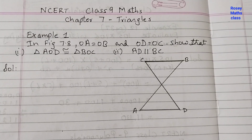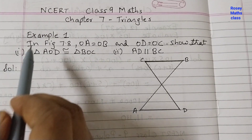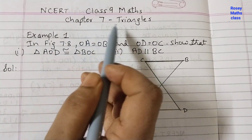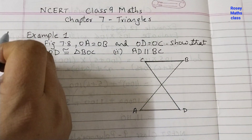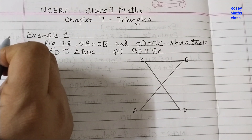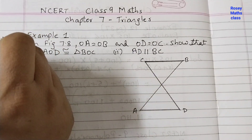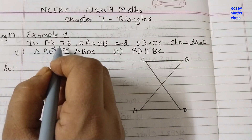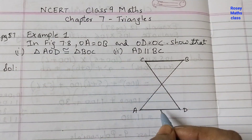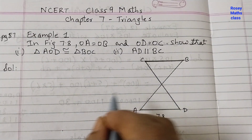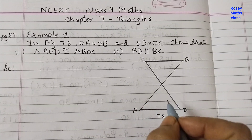Hello students, in today's video we shall discuss example number one of chapter 7, Triangles. This is on page number 87, figure 7.8 — this is given as figure 7.8 in the textbook.